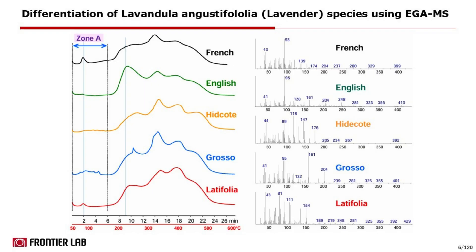Although the EGA curves seem similar, the average mass spectra of different samples show different mass ions, which indicate they have different fragrance compounds. This is the beauty of EGA analysis, which will allow us to decide the next step analysis for further characterization. In this case, these samples should be further analyzed by TDU-GC-MS for fragrance profiling.